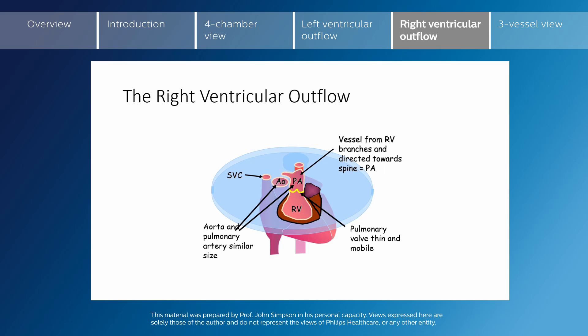The pulmonary valve should be thin and mobile, and a good way to assess this is by the fact that it cannot be seen during systole. It appears during diastole as it closes and disappears during systole.